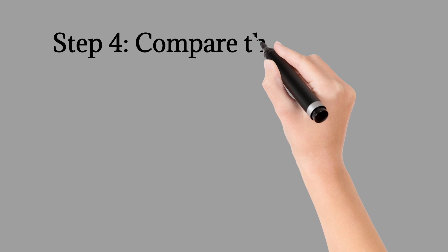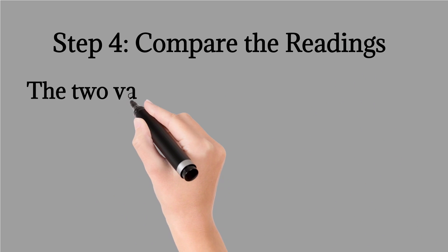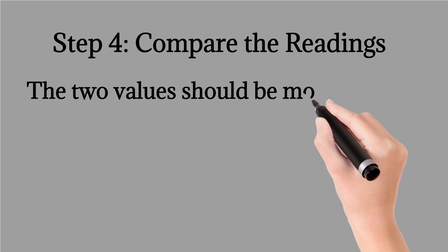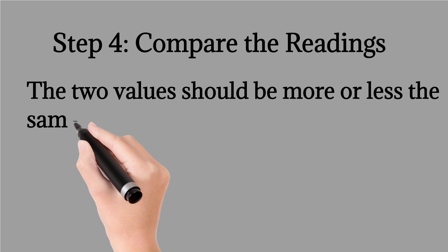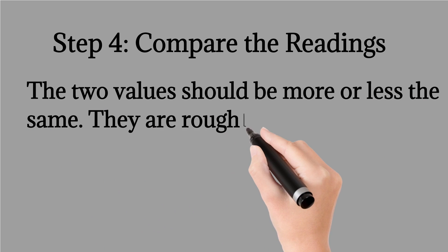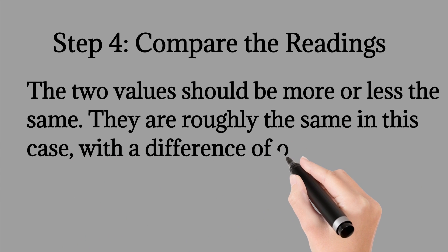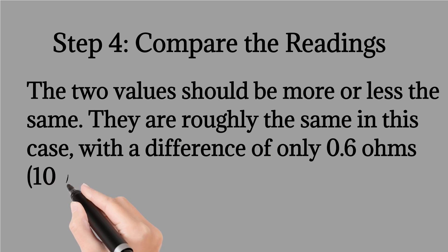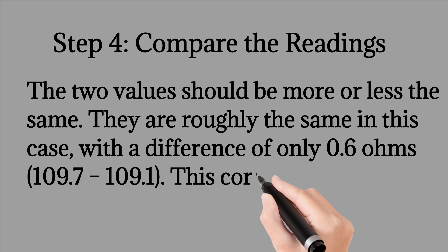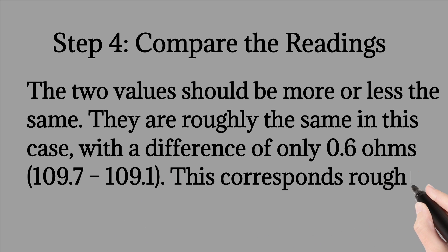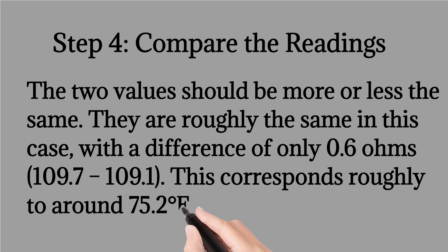Step 4. Compare the readings. The two values should be more or less the same. They are roughly the same in this case, with a difference of only 0.6 ohms, 109.7 to 109.1. This corresponds roughly to around 75.2 degrees Fahrenheit, 24 degrees Celsius.